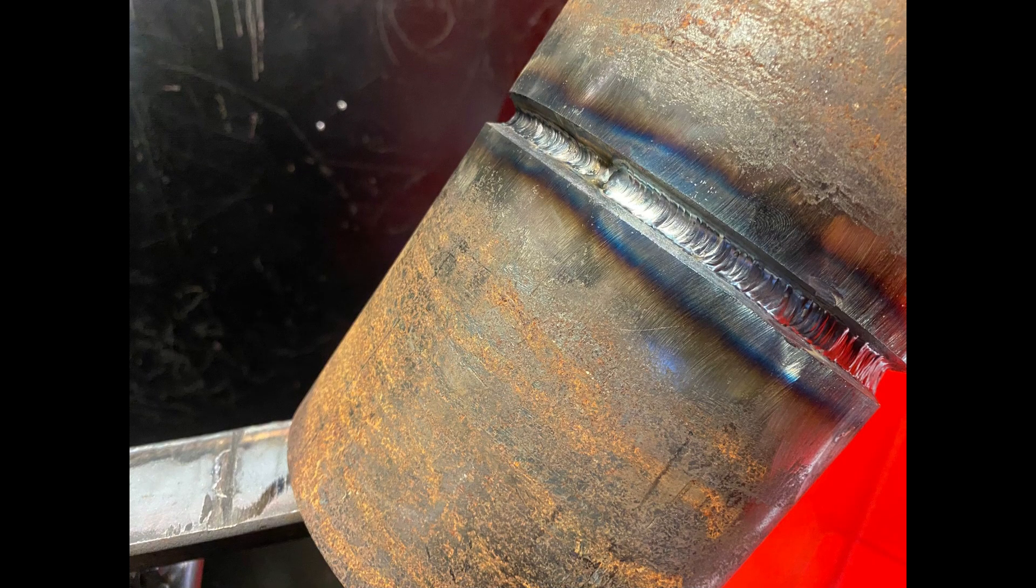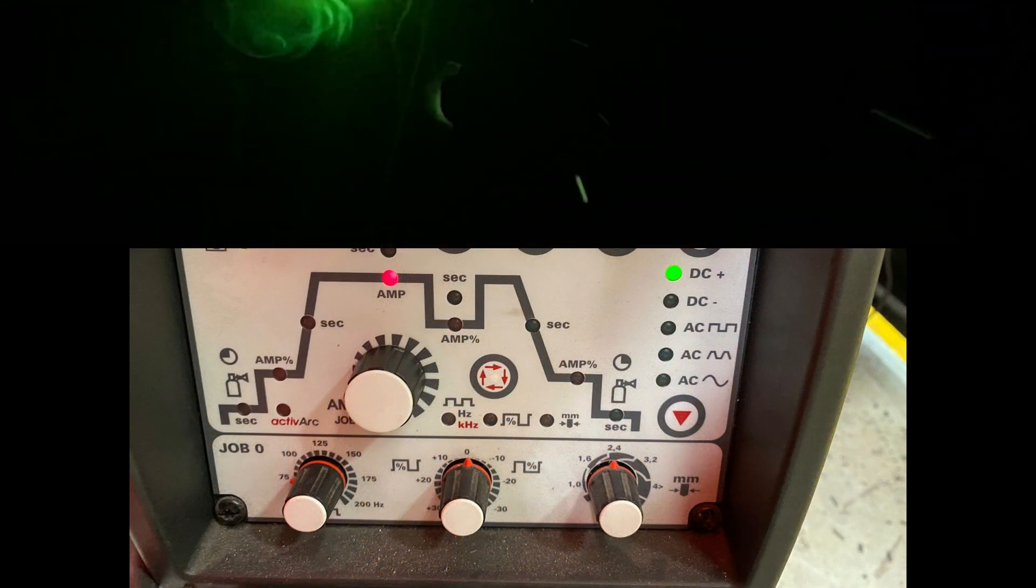Here's the completed root run and hot pass. Now we should be able to go on to our stick welding run and not blow through or disturb the root.